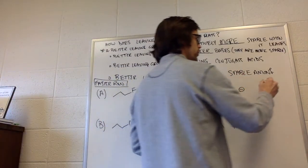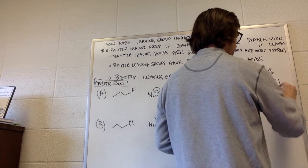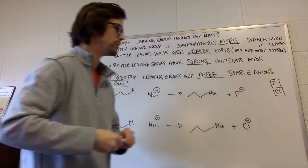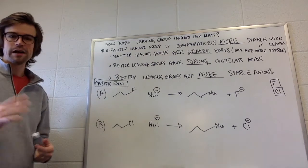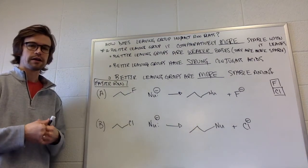So which leaving group is a better leaving group? Well, let's think about the periodic table real quick. So the periodic table has fluorine right here and chlorine right here. So take a minute, decide for yourself which is the better leaving group, rationalize it for yourself and then come back.